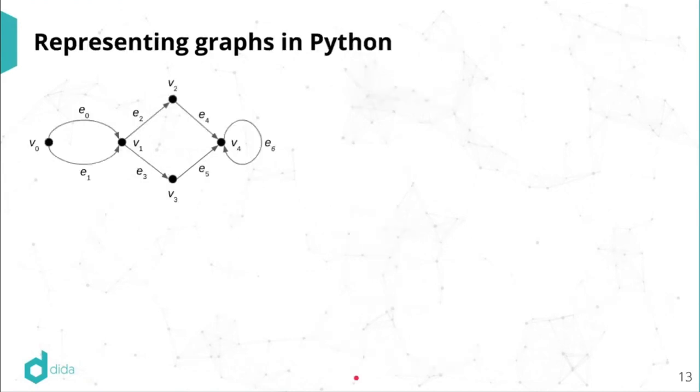All right. So now, how do you represent the graph in Python or any other language? So the first step is to pick an enumeration of the vertices and edges. And that's why I changed my notation a little bit. So before my nodes were A, B, C, D, and E, and now I'm calling them V0, V1, V2, V3, and V4. I just numbered them, put an order and then similar thing for the edges.